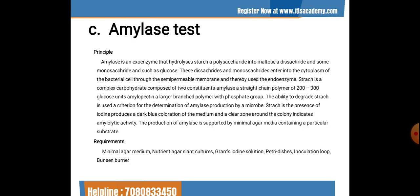The next test is the amylase test. Amylase is an exoenzyme that hydrolyzes starch (a polysaccharide) into maltose (a disaccharide) and monosaccharides such as glucose. These enter the bacterial cell cytoplasm through the semi-permeable membrane. Starch is a complex carbohydrate composed of amylose (a straight-chain polymer of 200–300 glucose units) and amylopectin (a larger branched polymer with phosphate groups). The ability to degrade starch is used as a criterion for determination of amylase production by the microbe.